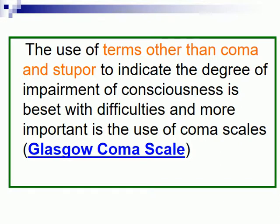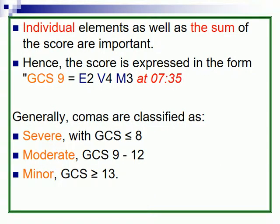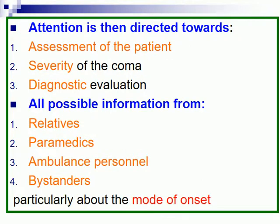Glasgow Coma Scale: individual elements as well as the sum of the score are important. Generally, coma is classified as severe according to Glasgow Coma Scale less than 8, moderate 9 to 12 points, and minor more than 13. Attention is directed toward assessment of the patient, severity of the coma, and diagnostic evaluation.